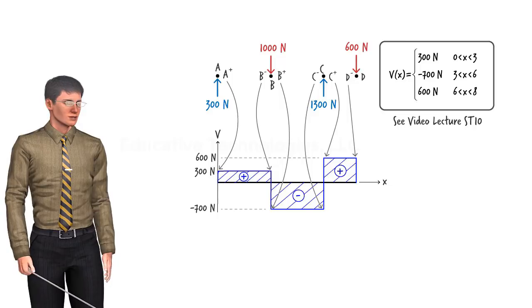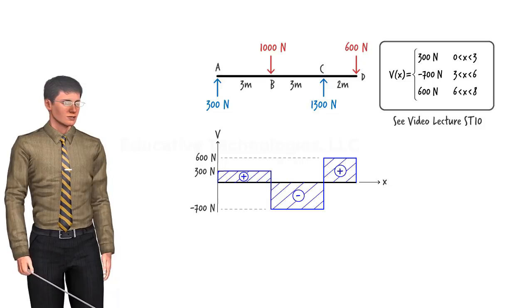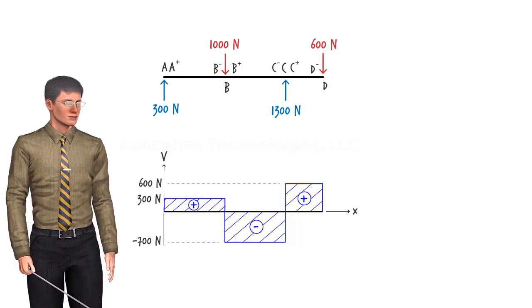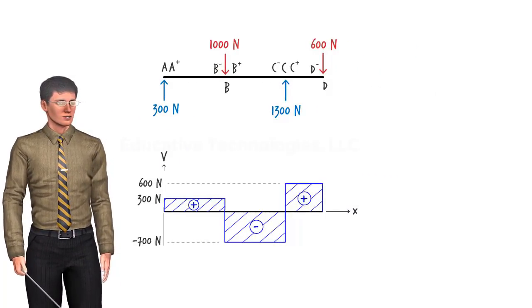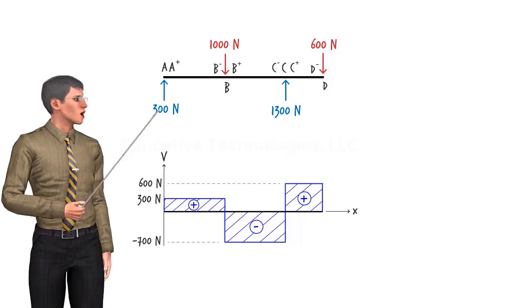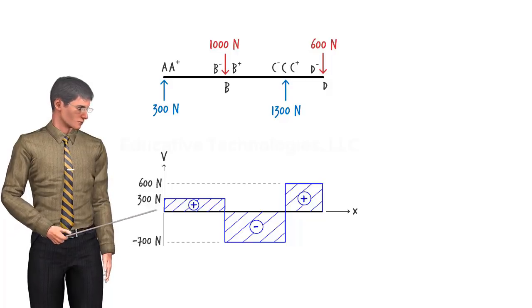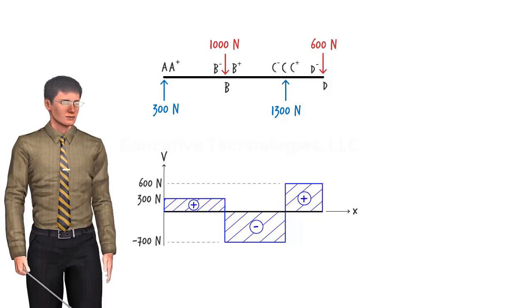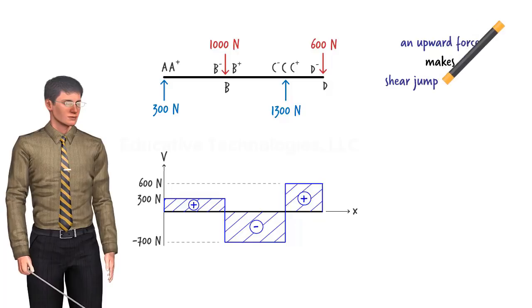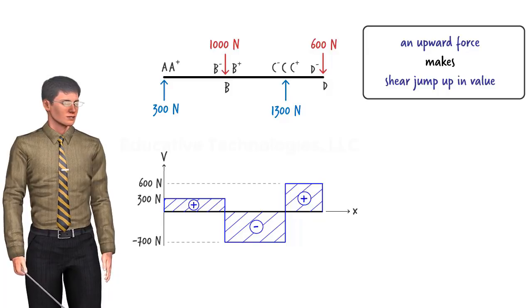Let us devise a technique for constructing the shear diagram directly from the free body diagram by closely examining the relationship between the two diagrams. Starting from the left end and working toward the right end of the beam, there is an upward force of 300 newtons at A. This corresponds to a jump in shear value — it jumps from zero to 300 newtons. So we can say: an upward external force on the beam causes an increase in shear value, and the amount of increase is equal to the magnitude of the upward force.